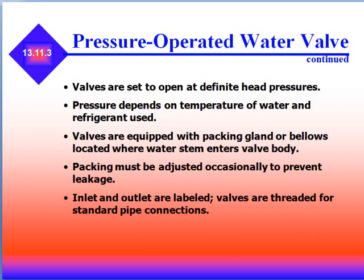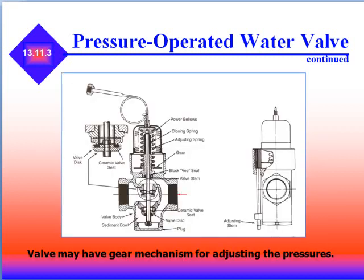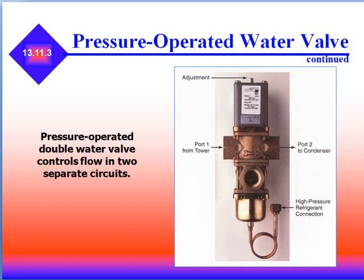Pressure depends on the temperature of the water and the refrigerant used. Valves are equipped with packing glands or bellows located where the water stems enter the valve body, and packing must be adjusted occasionally to prevent leakage. Inlet and outlets are labeled, and valves are threaded for standard piping connections. The valves may have gear mechanisms for adjusting pressures. A pressure operated double water valve controls flow into two separate circuits, with port one from the tower, port two from the condenser, and a third port connecting to the water supply.